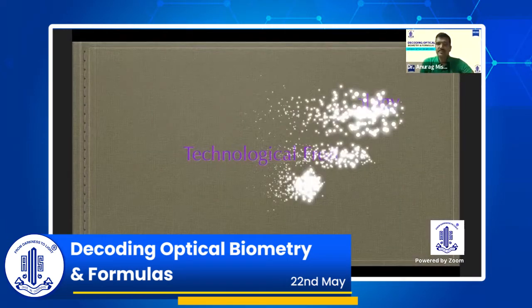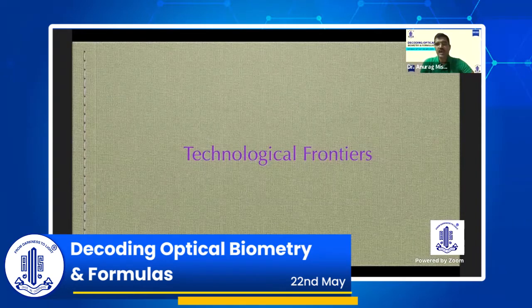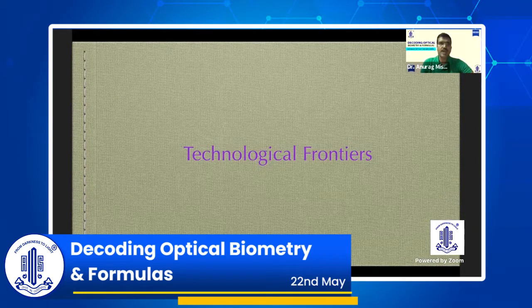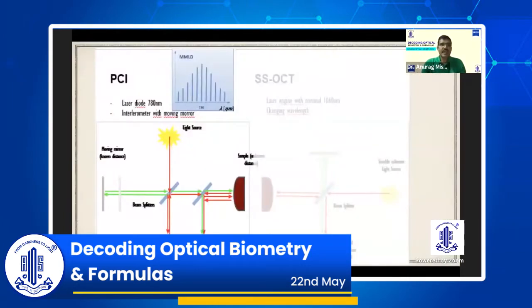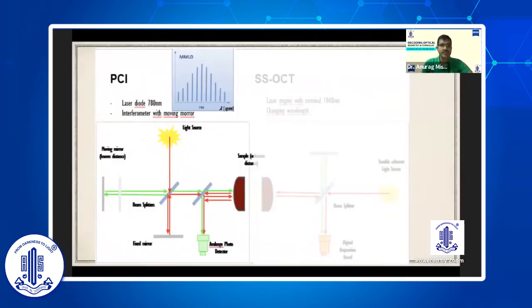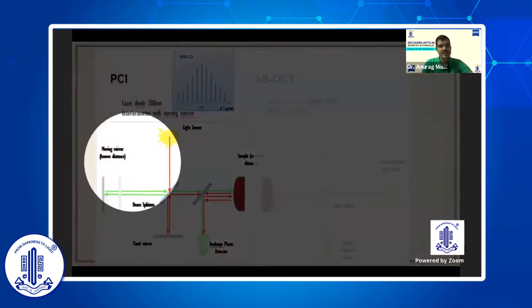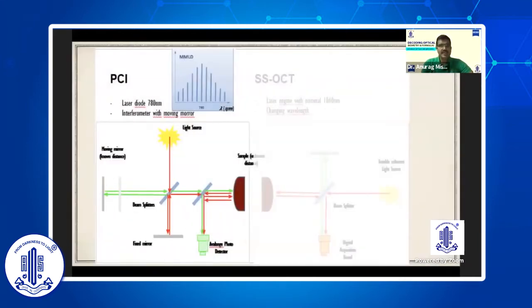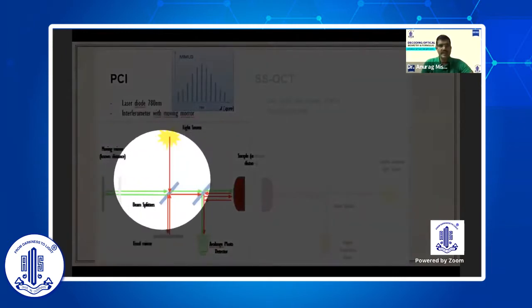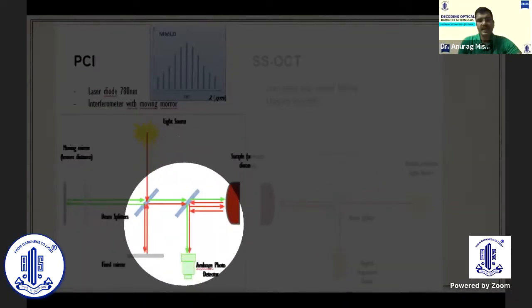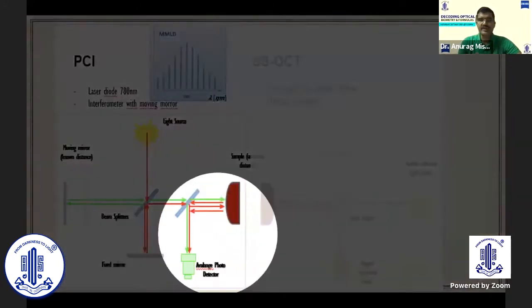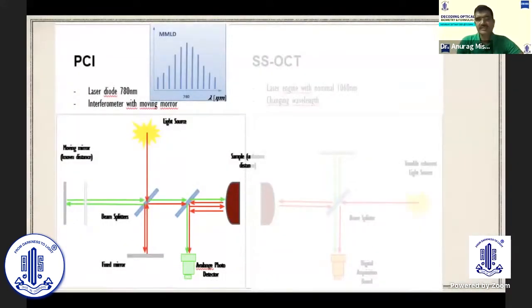The first biometer that ever came into the market, and Zeiss has to be credited for bringing it to our notice, was based on the technology called partial coherence interferometry. It utilized a light source called MMLD, Multimedia Light Display. As you can see, the wavelength is peaking at several points with a gap in between them. The wavelength was 780 nanometers. And this is the only concept which utilized two mirrors. One of them is a moving mirror, the other is a fixed mirror. The light source emanates light which gets reflected, which gets divided by a beam splitter into two halves. Both the light fragments then enter the subject's eye, then they get reflected by another angulated beam splitter to be caught by a photodetector device to give us the reading of different distances between different tissues.